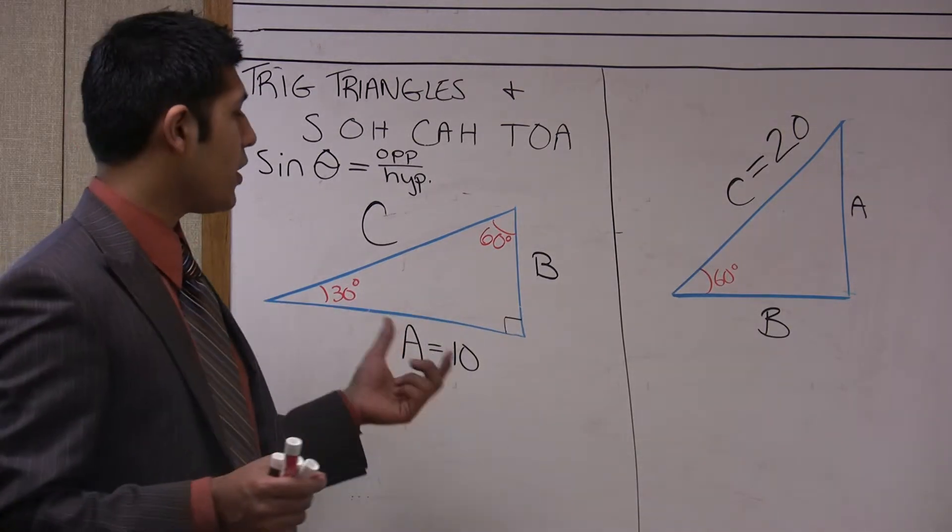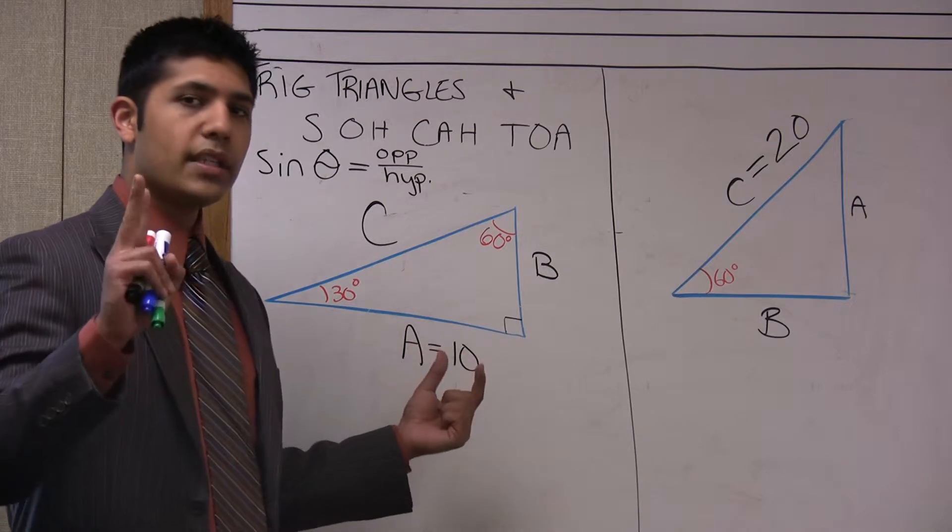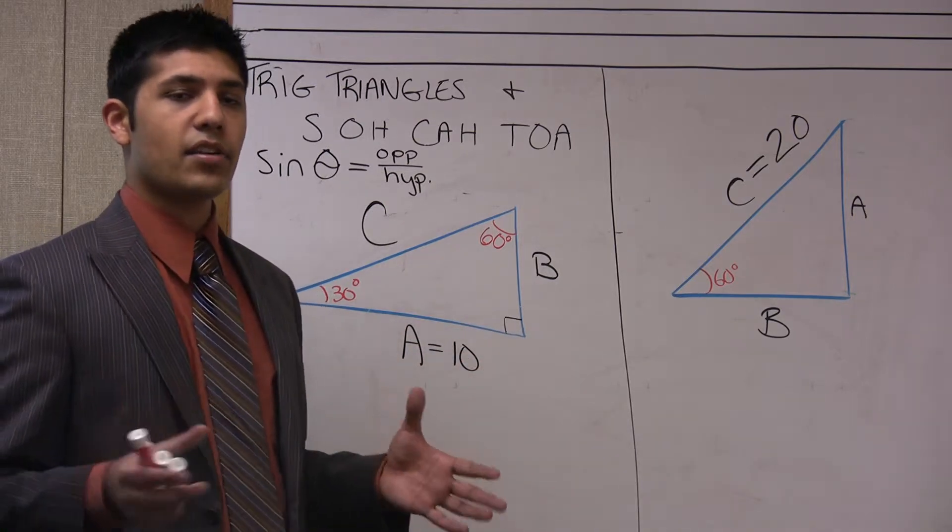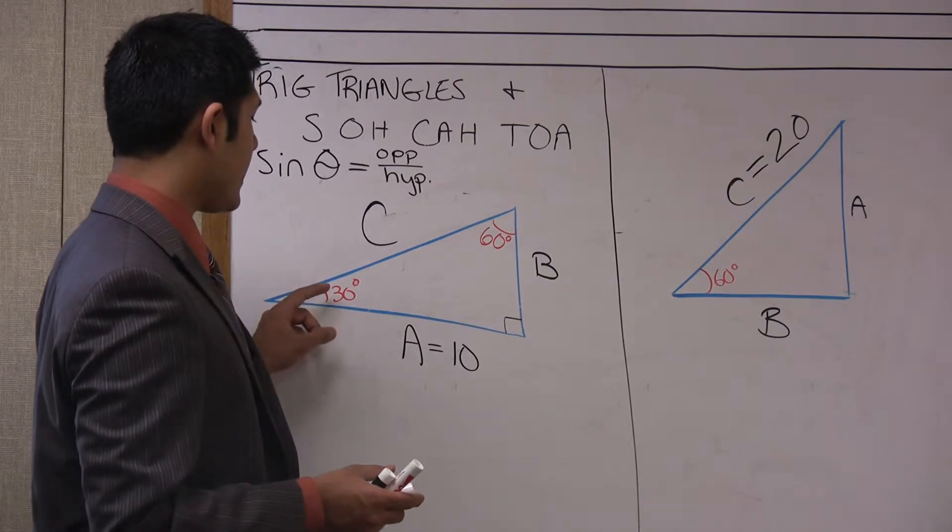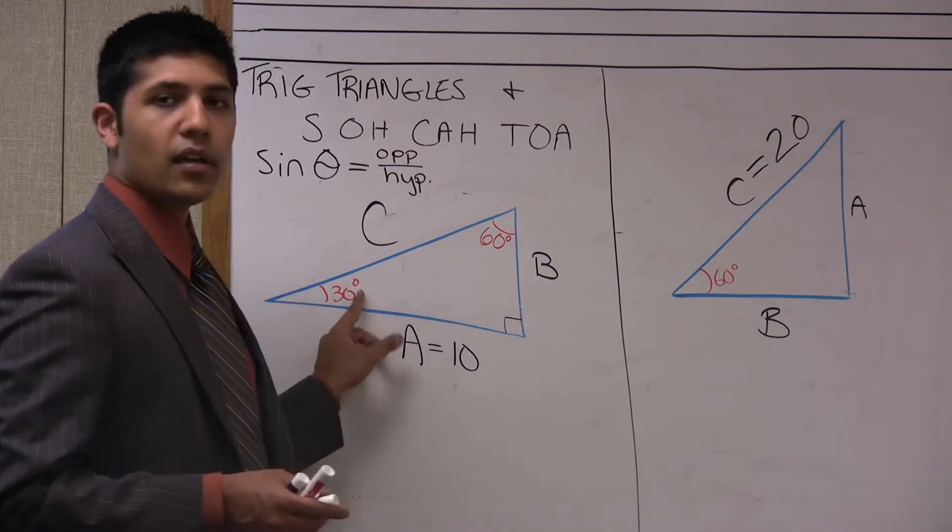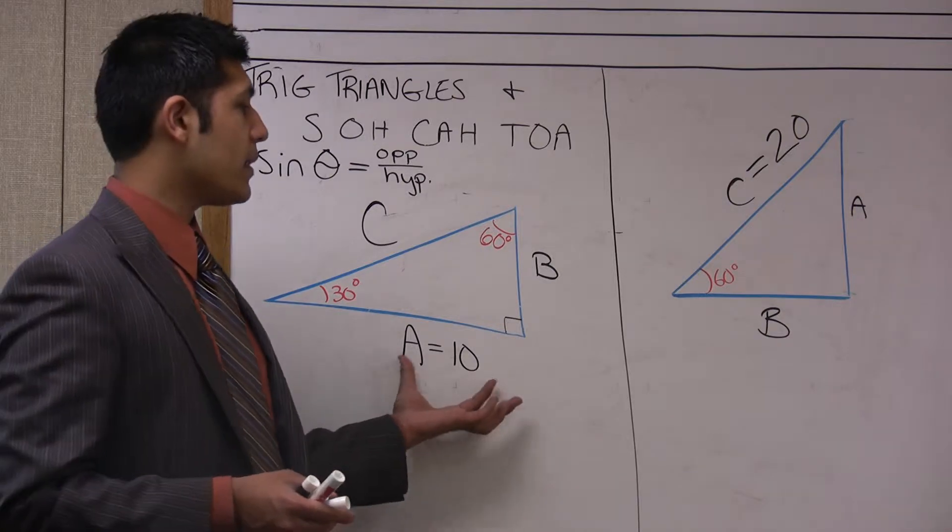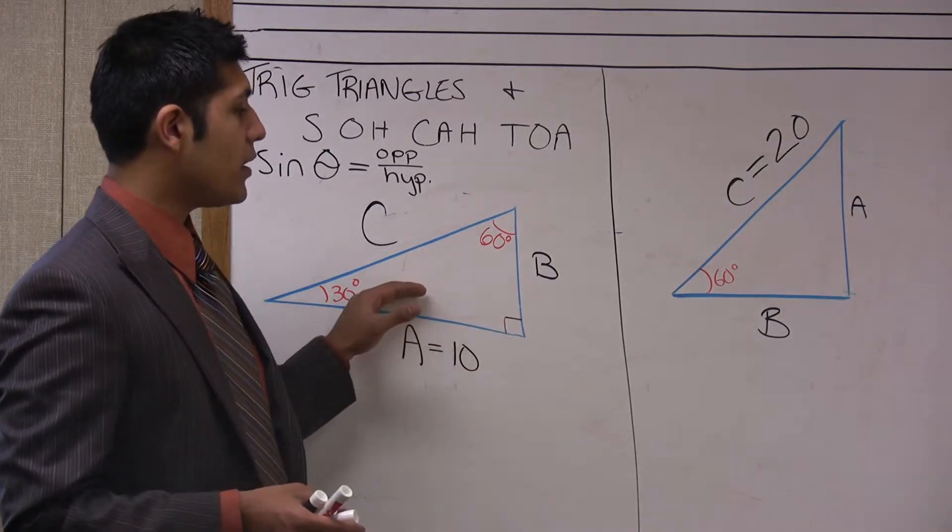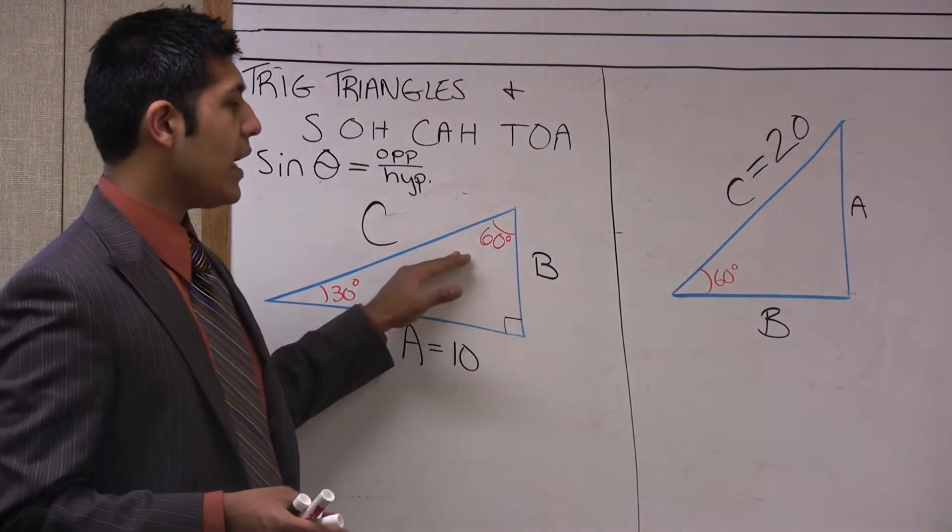In any physics problem or any trig problem where you get a right triangle, all you need is two bits of information and you're able to solve for everything else about that triangle. In this case, all we got was the 30 degree angle and A equals 10, and we were able to solve that the other angle was 60.